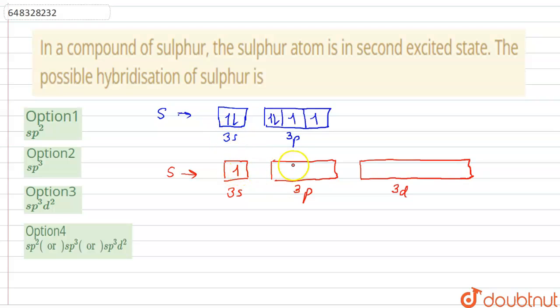So one electron will remain in 3s and 3p, and two electrons will get excited to d orbital. Now this configuration is very stable in second excited state, why?